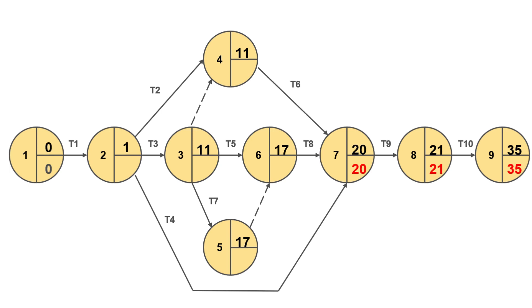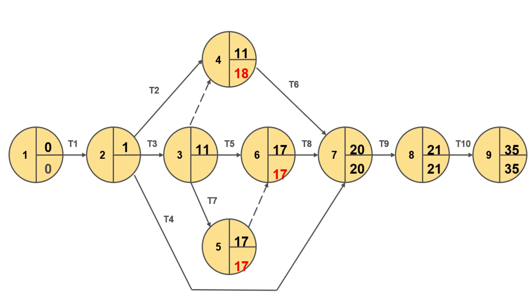We indicate like so in that node. Repeat the same calculation for node 7 and we get an LFT of 20 for node 7. We continue to compute LFTs further for nodes 4 and 6. We get LFT of node 4 as 18 - calculation is 20 minus 2 since task 6 needs only 2 days. And we get a value of 17 as LFT of node 6 since task 8 needs 3 days.